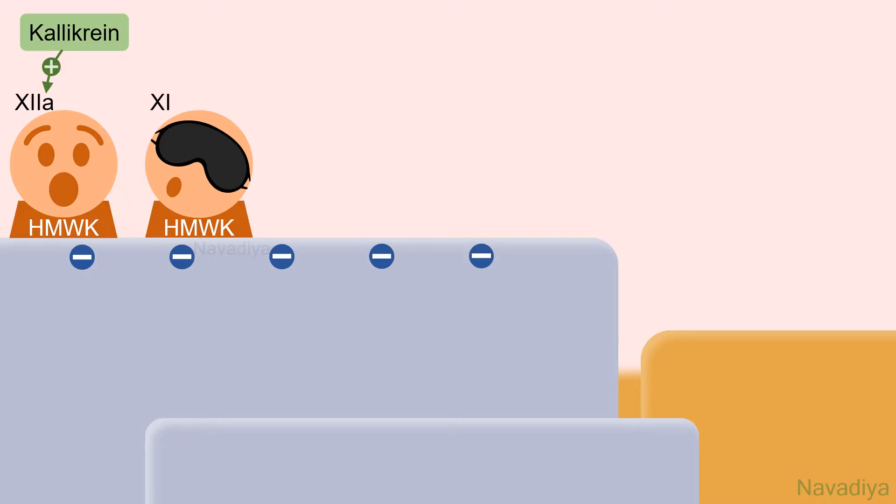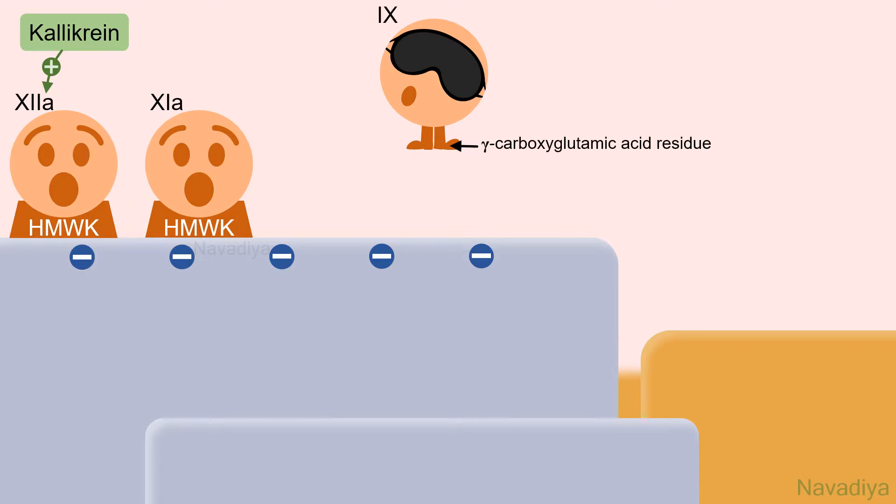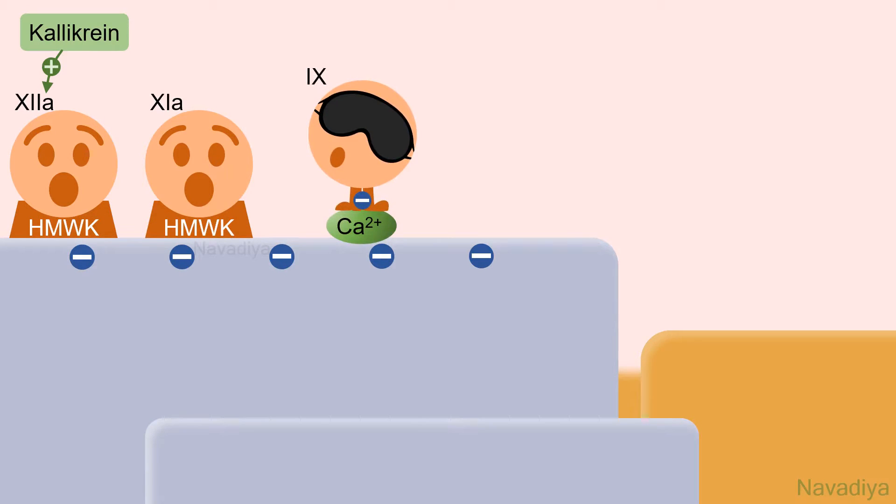Then comes factor 11, which is activated by factor 12a by proteolysis. Next is factor 9. It is one of those factors whose synthesis is dependent on vitamin K. It has gamma-carboxyglutamic acid residue which has a negative charge. It helps the factor to bind with membrane phospholipid via positively charged calcium ions. Then it is activated by factor 11.